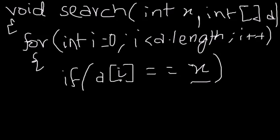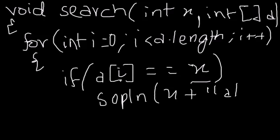Then let's say System.out.println, print X plus at plus i, because that's the position it's at, right?